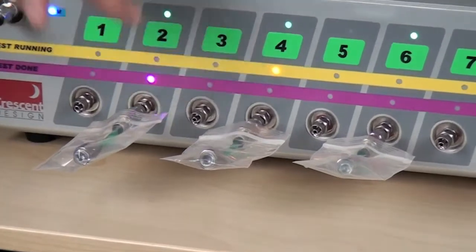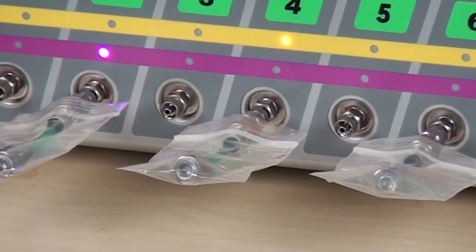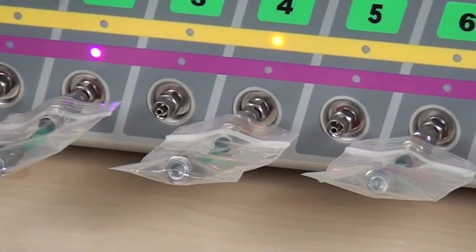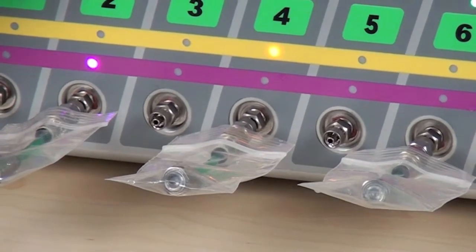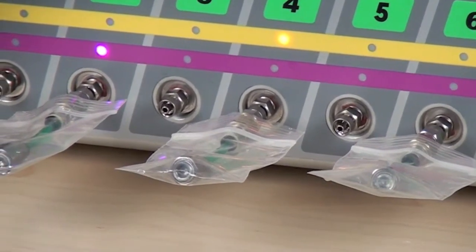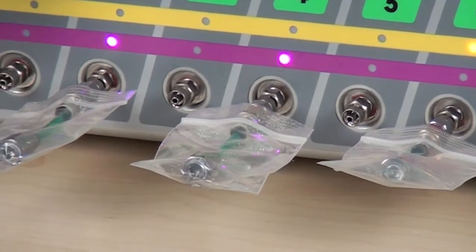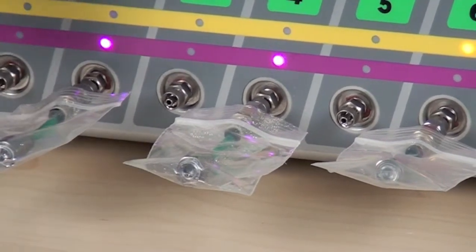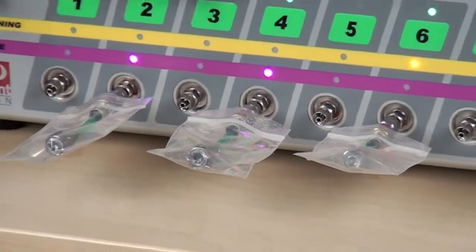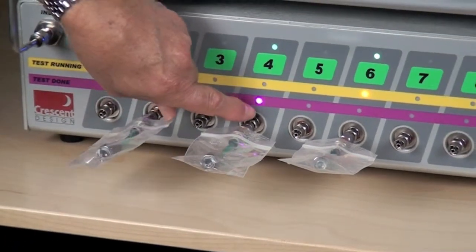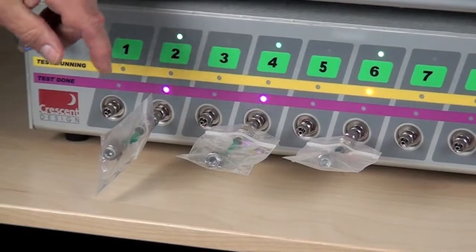And here you see it selected that port. After the test, the first one failed, it printed the results. And as in port 1, it has failed and turned on the purple light to show that it's failed.